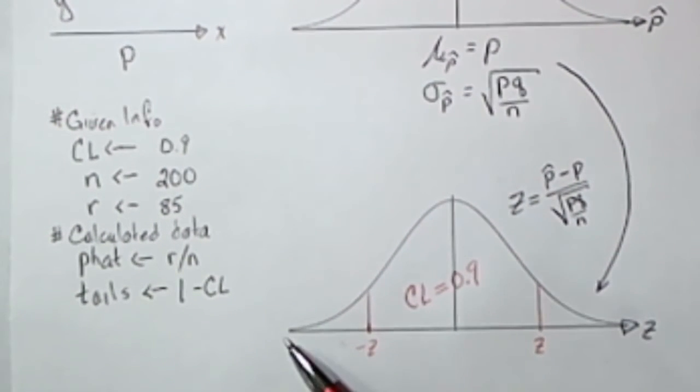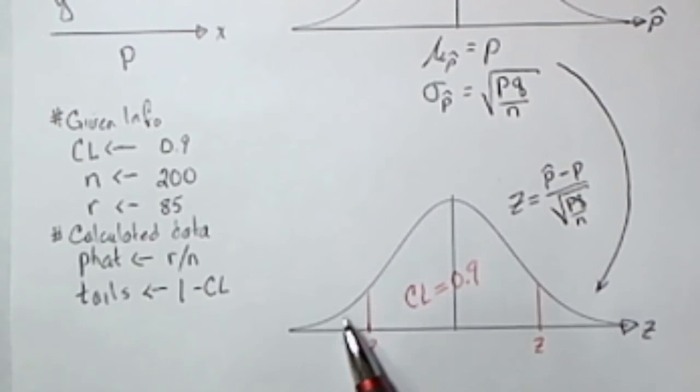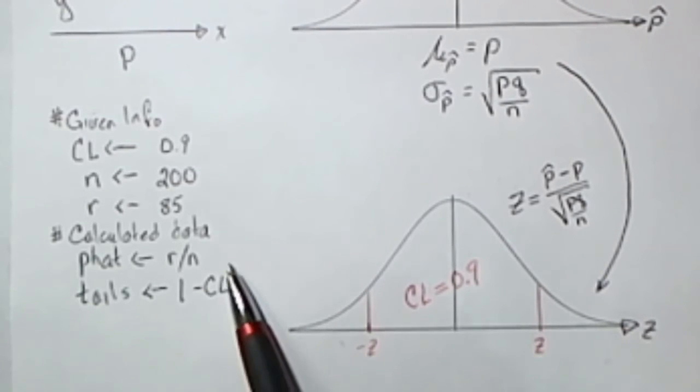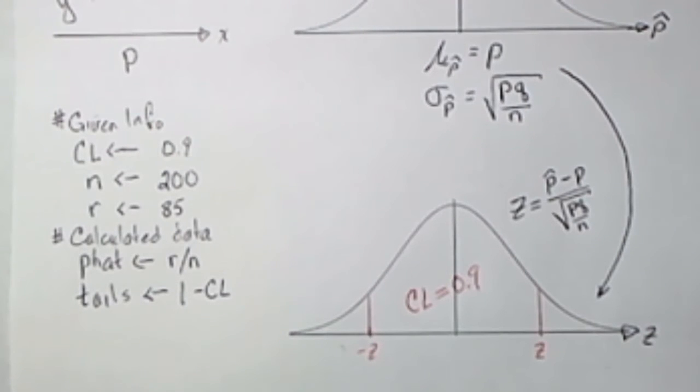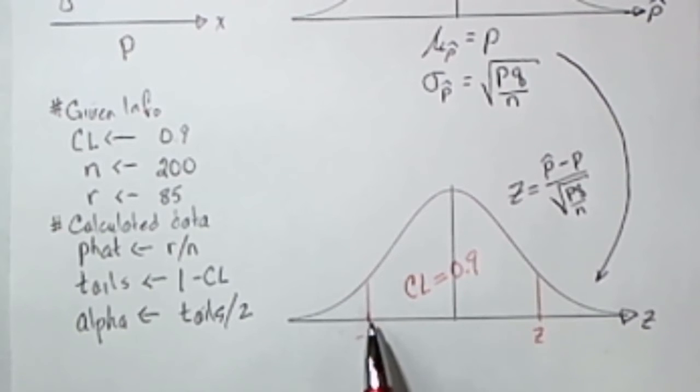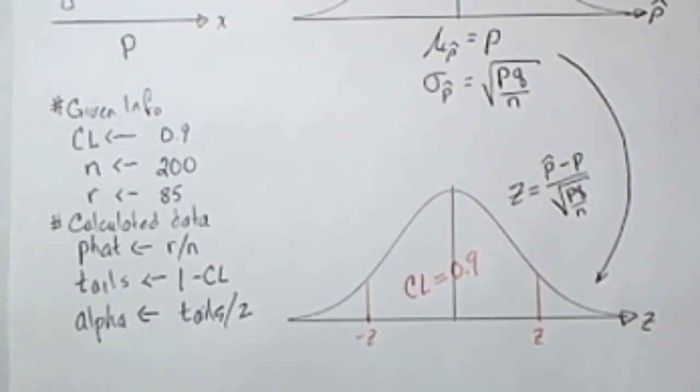I know that the total area under the curve is 1 or 100%. If I subtract this 90% from 100% then there's got to be 10% out in these two tails. So 1 minus the confidence level is going to tell me the area in the two tails. Because of the symmetry in this problem the area in one of the tails is going to be the tails divided by 2.